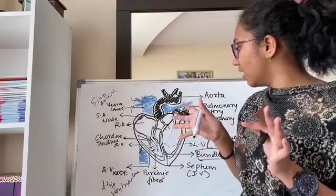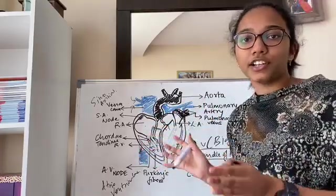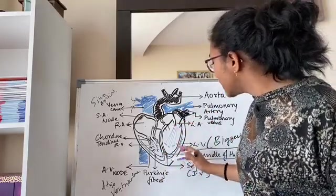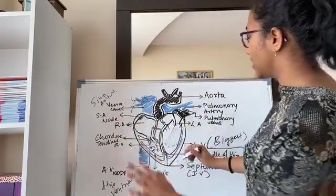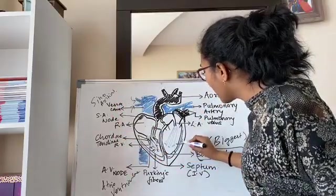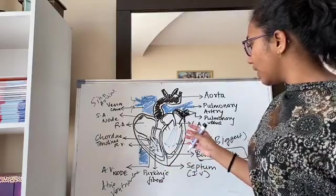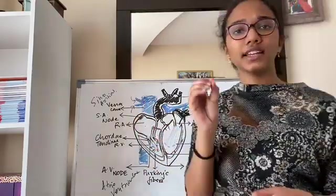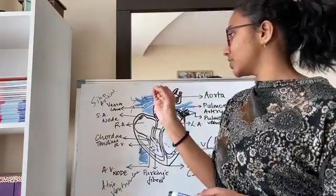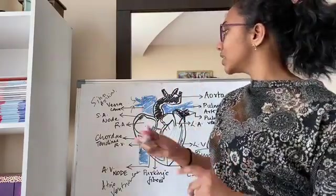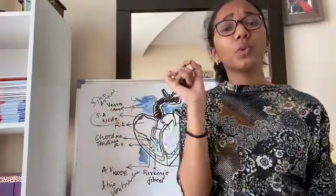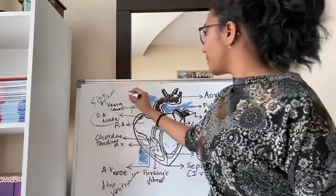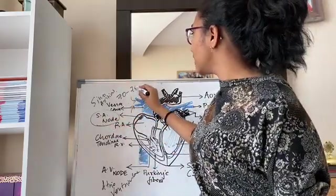This bundle of His when it moves across the entire musculature, some small fibers also come here known as Purkinje fibers. They also help in generating certain action potential. This entire nodal musculature generates some amount of small action potential, but major part of it is generated by SA node. SA node is the most important one because its action potential generates about 70 to 75 heartbeats per minute. Our normal heartbeat rate is 72 beats per minute.